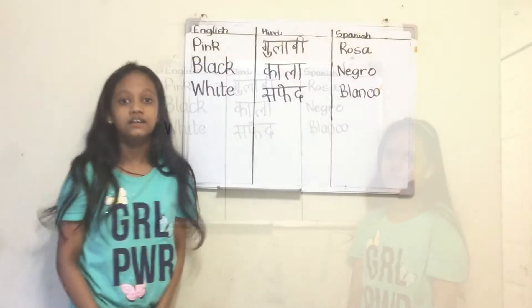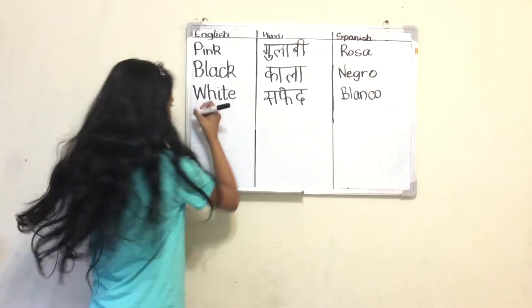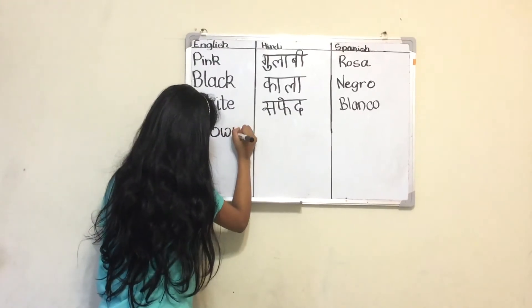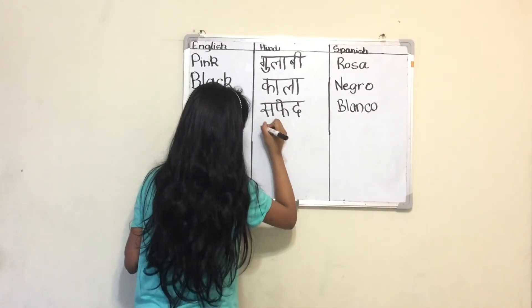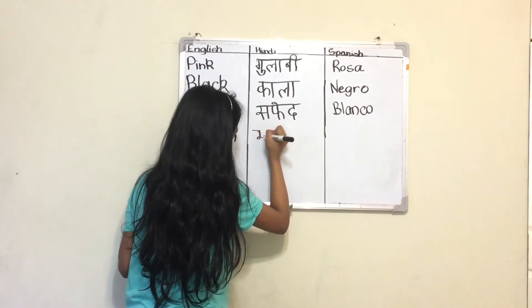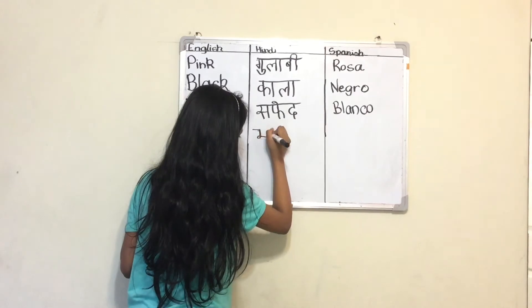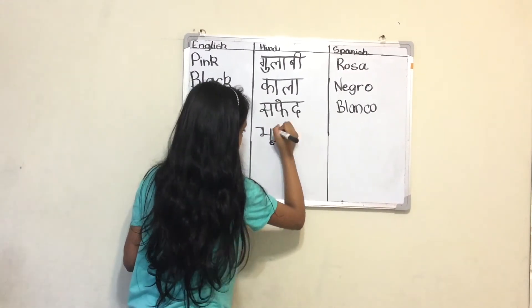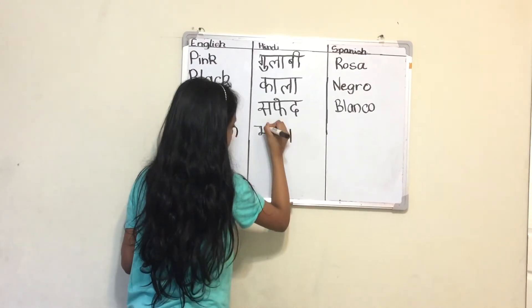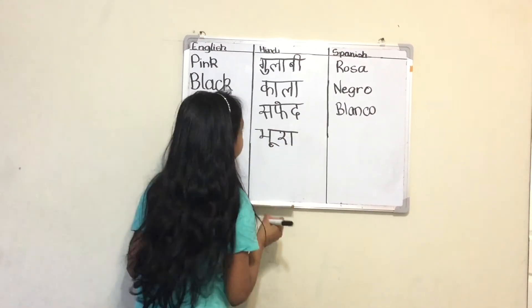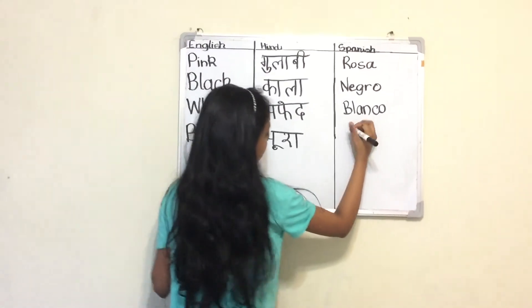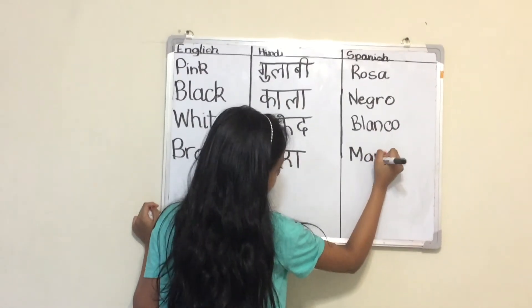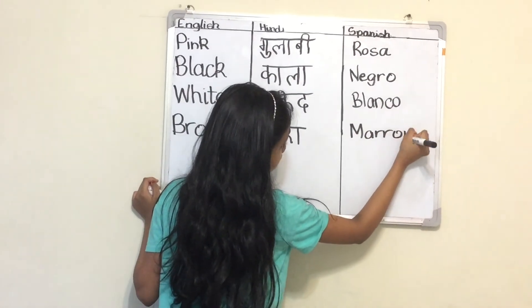So now I will write Brown. B, R, O, W, N. Brown in Hindi is Bhura. And in Spanish, Brown is Marrón.